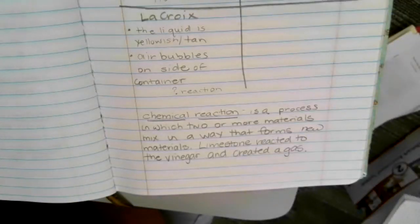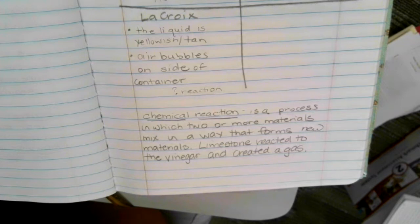The next definition you need to write down is chemical reaction. And this is a process where two or more materials mix in a way that forms new materials. So limestone reacted to the vinegar and created a gas.